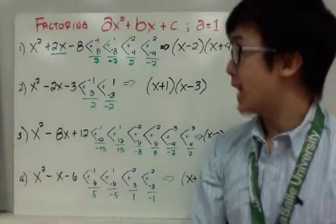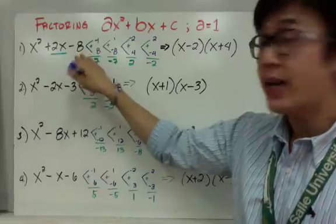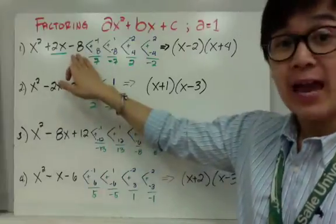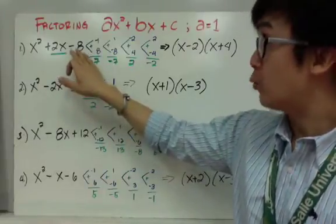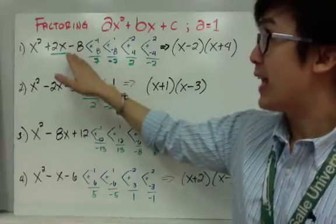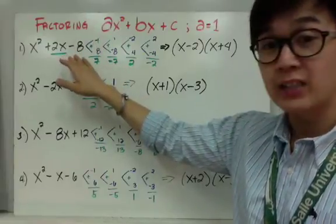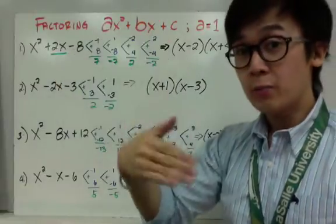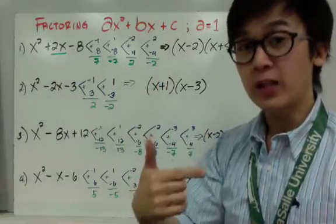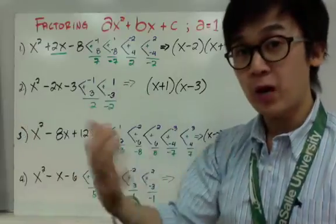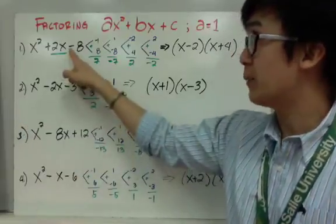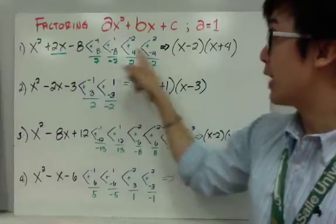On my first example, I have x squared plus 2x minus 8. Now, this time, my last term is negative 8. And we know that if you have a negative number, when you find a factor for negative 8, one of the numbers is negative and the other one is positive. It cannot be both negative or both positive. Otherwise, it's not going to be a negative answer.